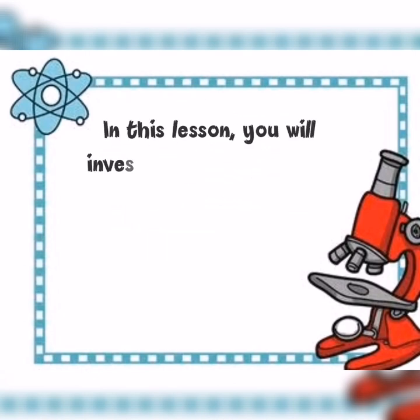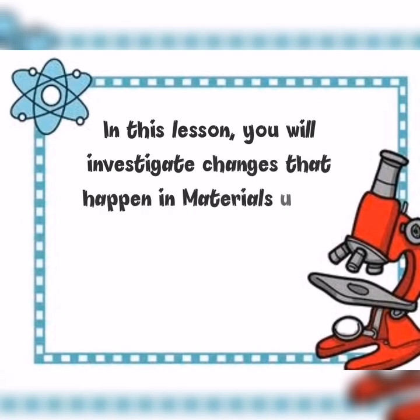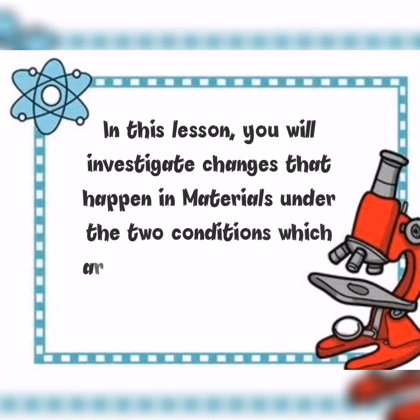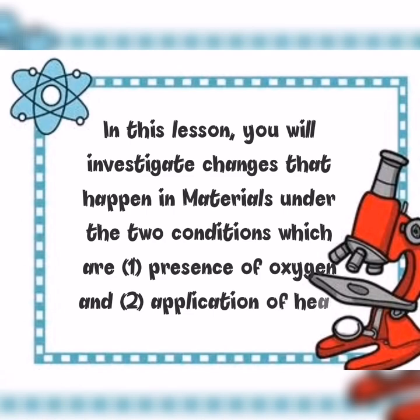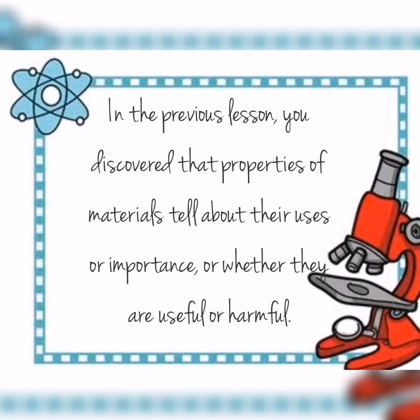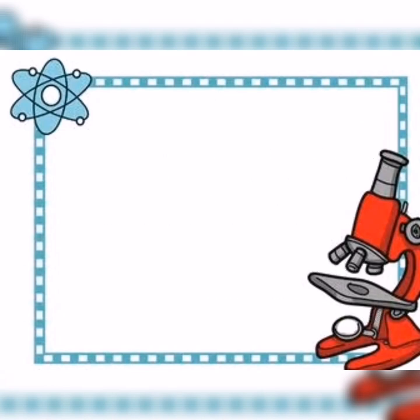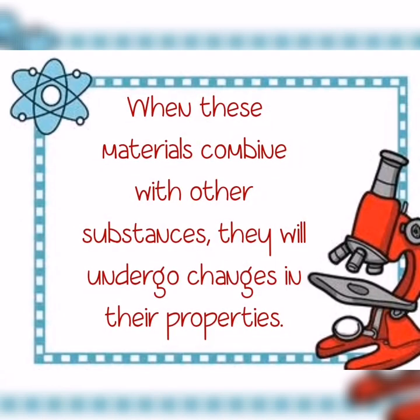In this lesson, you will investigate changes that happen in materials under two conditions: number one, presence of oxygen, and number two, application of heat. In the previous lesson, you discovered that properties of materials tell about their uses or importance, or whether they are useful or harmful. When these materials combine with other substances, they will undergo changes in their properties.